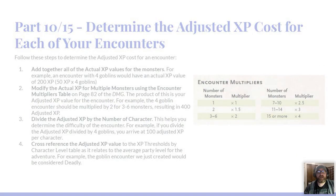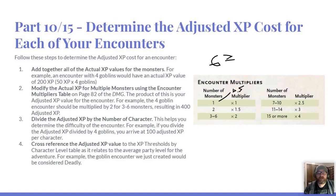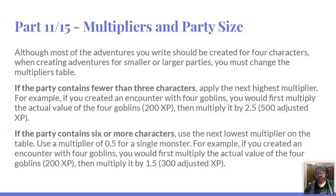The summary on multiplier adjustments: fewer than three characters — go up one level on the multiplier table (so ×2 becomes ×2.5, ×1 becomes ×1.5). Six or more characters — go down one level (×2 becomes ×1.5, ×0.5 for a single monster). This is why mobs will always feel more difficult for a party than fewer monsters, due to action economy. This adjusted amount is the actual cost of your encounters.